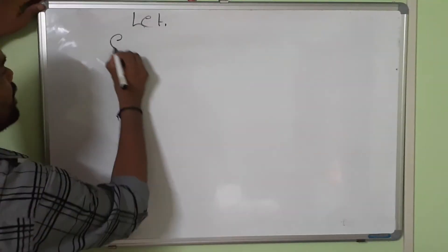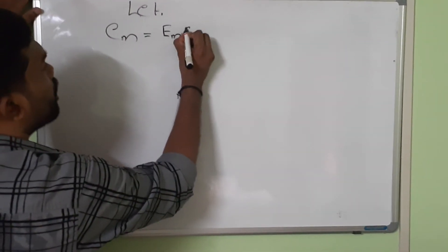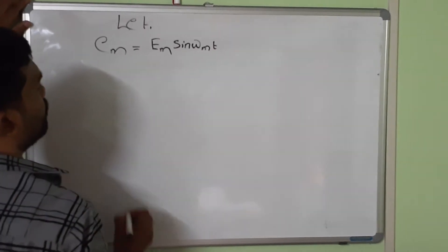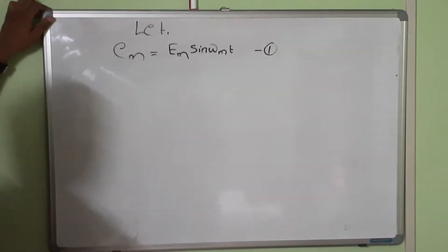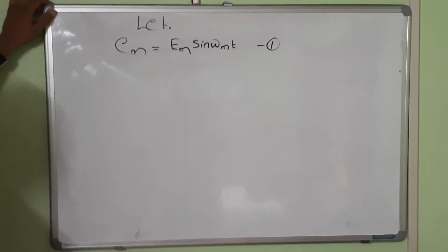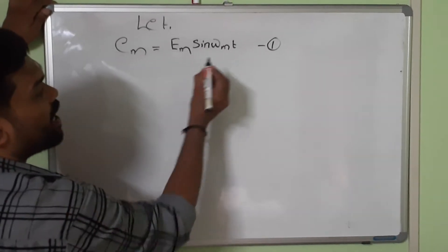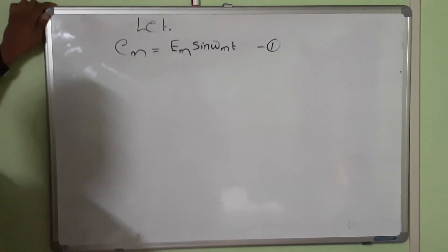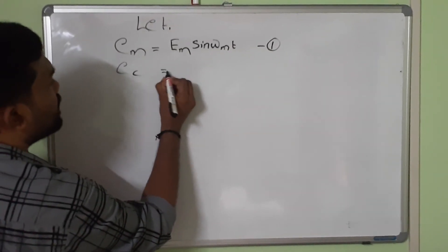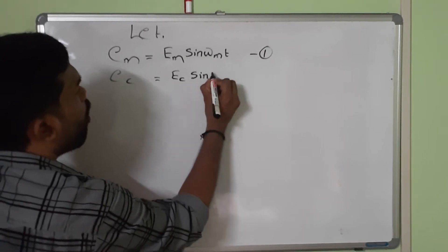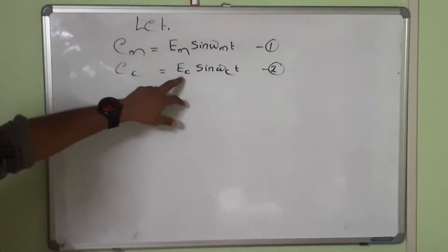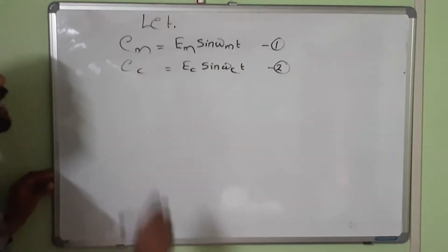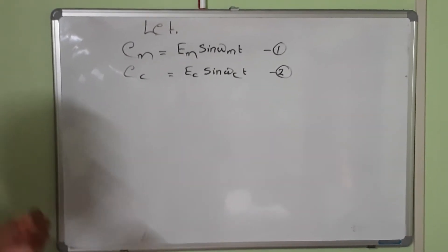Let the modulated signal be e_M. The modulating signal: e_M = E_M sin(ω_M · t) — equation number 1. Here E_M is the maximum amplitude of the modulating signal and ω_M is the angular frequency. The carrier signal: e_C = E_C sin(ω_C · t) — equation number 2. E_C is the maximum amplitude and ω_C is the angular frequency of the carrier signal.